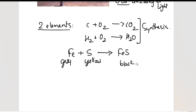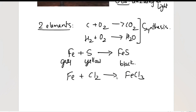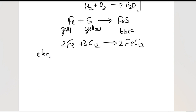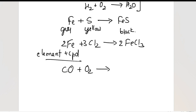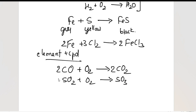Another example: iron reacts with chlorine gas to form FeCl3. To balance: put 3 on chlorine, 2 on FeCl3, and 2 on iron — giving 6 chlorines on each side. This is a balanced equation. Combination can also happen between an element and a compound. Carbon monoxide (compound) reacts with oxygen (element) to give CO2: 2CO + O2 → 2CO2. Similarly, sulfur dioxide plus oxygen gives sulfur trioxide.